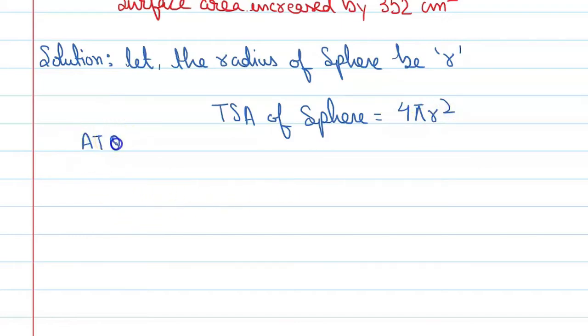The question gives us conditions. The initial surface area increases by 352. When the radius increases to r plus 2, it becomes 4π(r+2)².